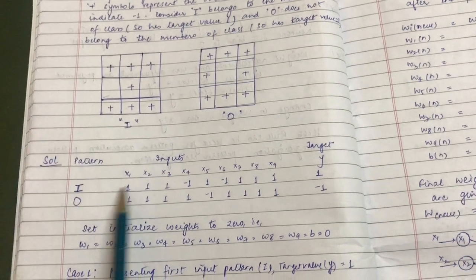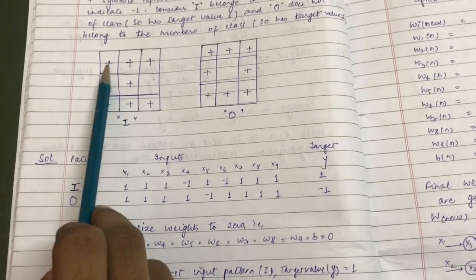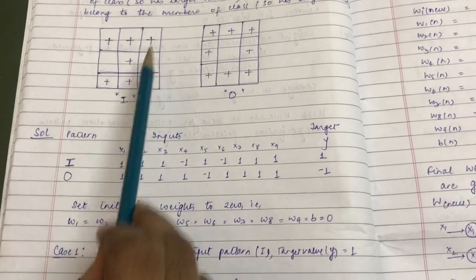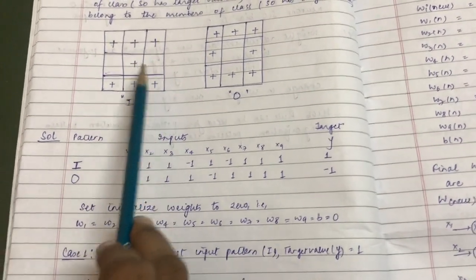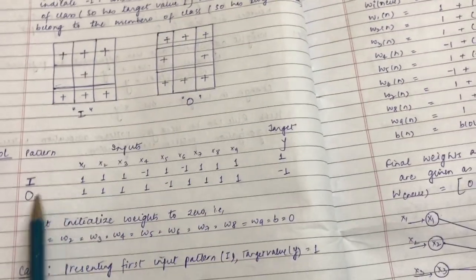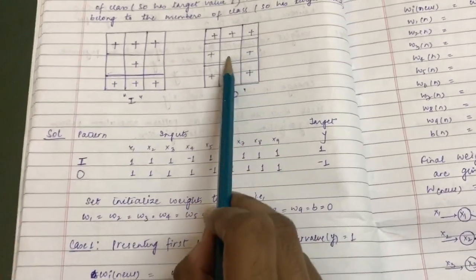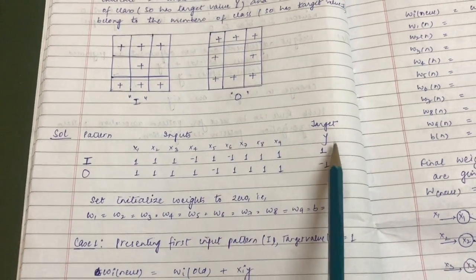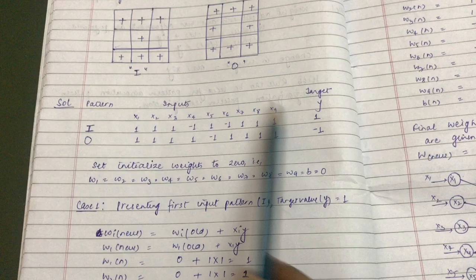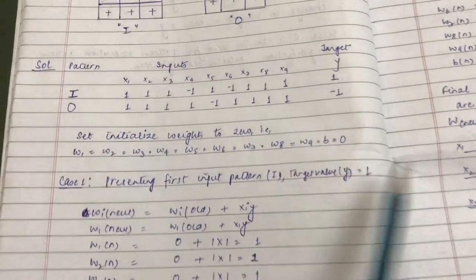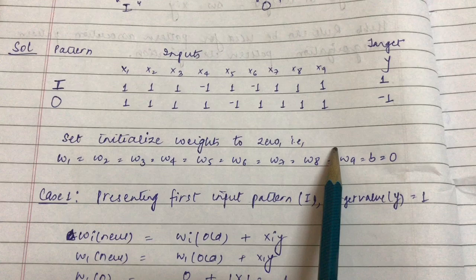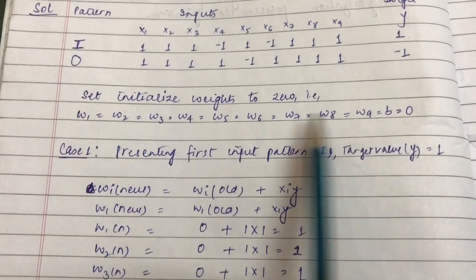The first step is to arrange the data in tabular form for patterns I and O. Since plus indicates 1, for pattern I the inputs are: 1, 1, 1, minus 1, 1, minus 1, 1, 1, 1. For pattern O the inputs are: 1, 1, 1, 1, 1, 1, 1, 1, 1. Target value for I is 1 and for O is minus 1. According to the algorithm, we initialize all weights w1 through w9 and bias b to 0.